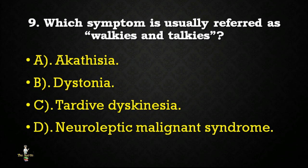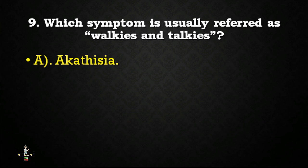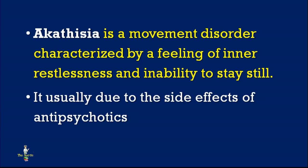Next question: which symptom is usually referred to as 'wakis and tokis'? Options: akathisia, dystonia, tardive dyskinesia, neuroleptic malignant syndrome. Correct answer is akathisia. Akathisia is a movement disorder characterized by a feeling of inner restlessness and inability to stay still. It is usually due to the side effects of antipsychotics.